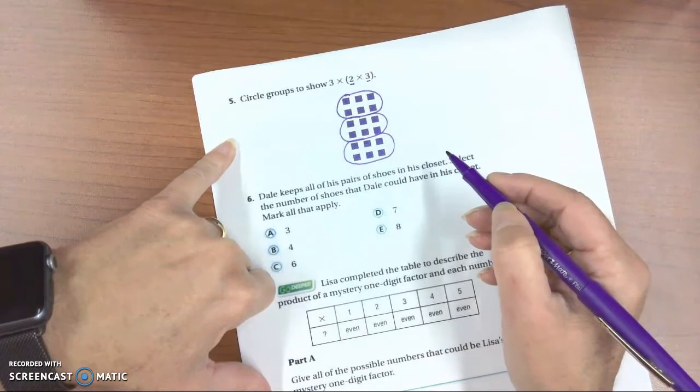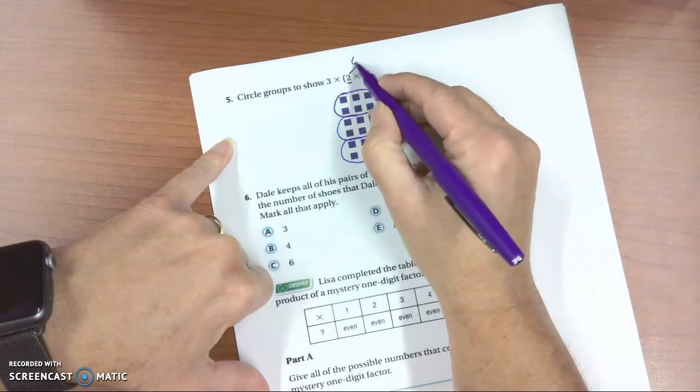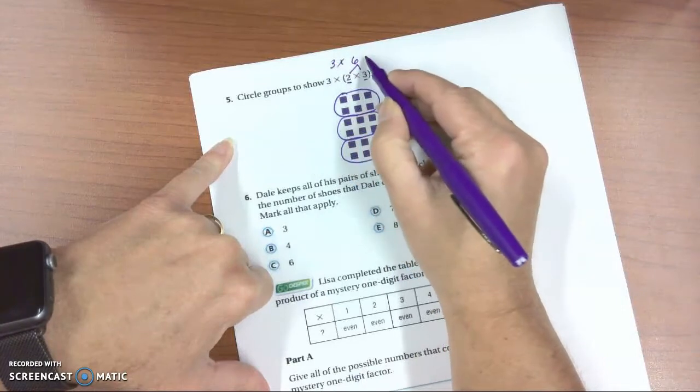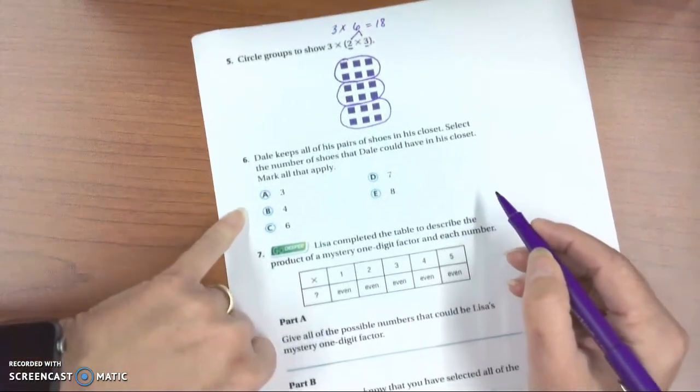If you really wanted to go on and find the answer to that, 2 times 3 is 6, and 3 times 6 is 18. That wasn't required, but just so you know the answer.